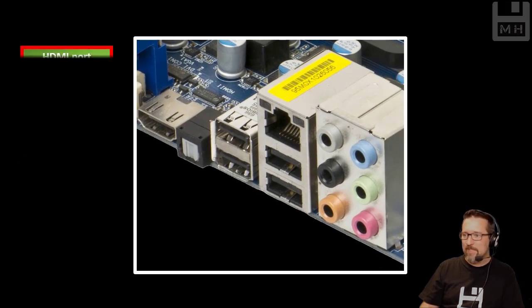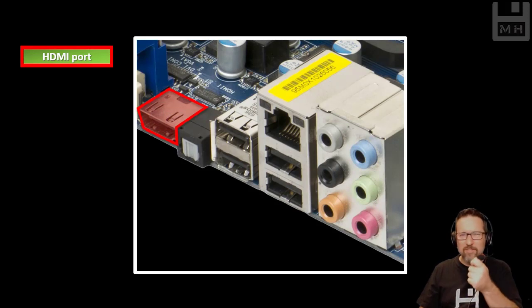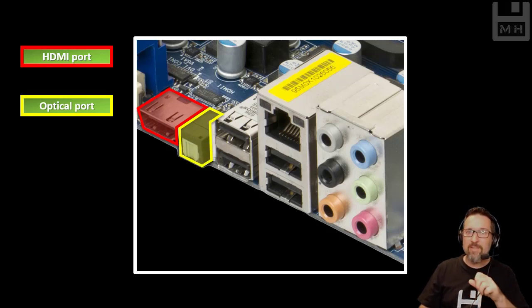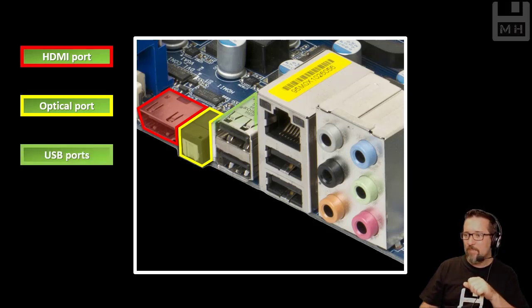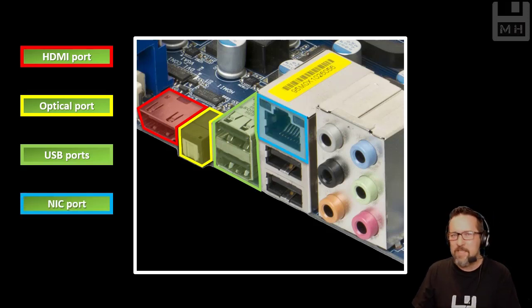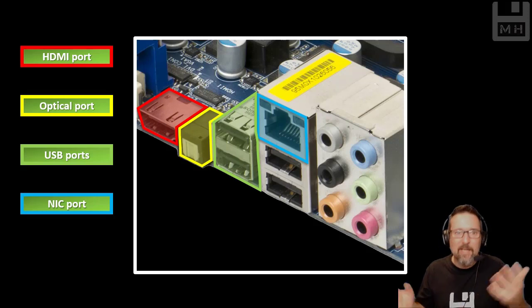Moving down, here we have the HDMI port, and we know what an HDMI connector looks like. That's an optical port — it's covered because optical uses bursts of light, so there can't be any light in the way. Then we have our good old faithful USB ports. Right at the top, they have an onboard NIC port — Network Interface Card — to connect our Ethernet cable. Plug it in and you're on the network.